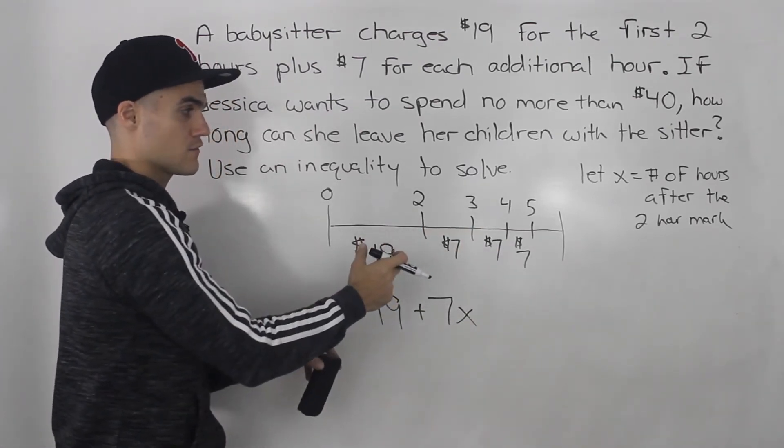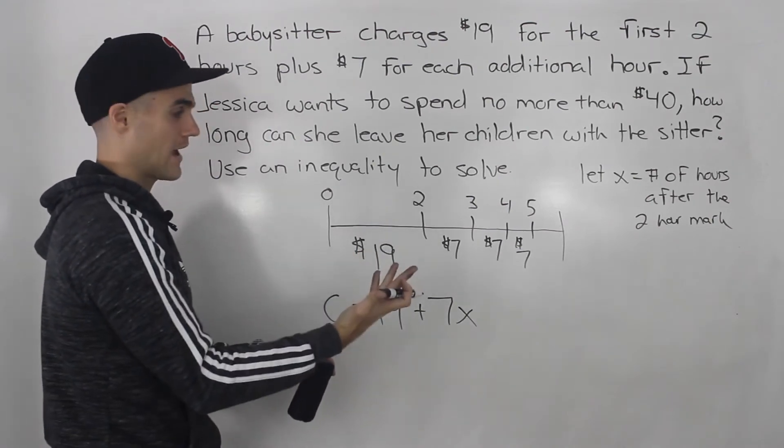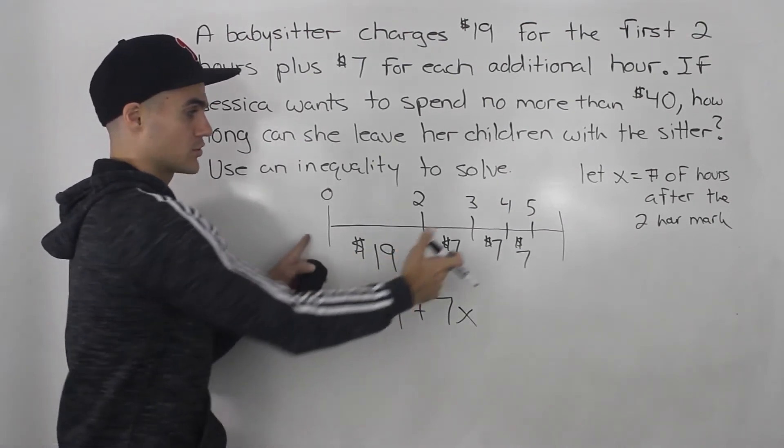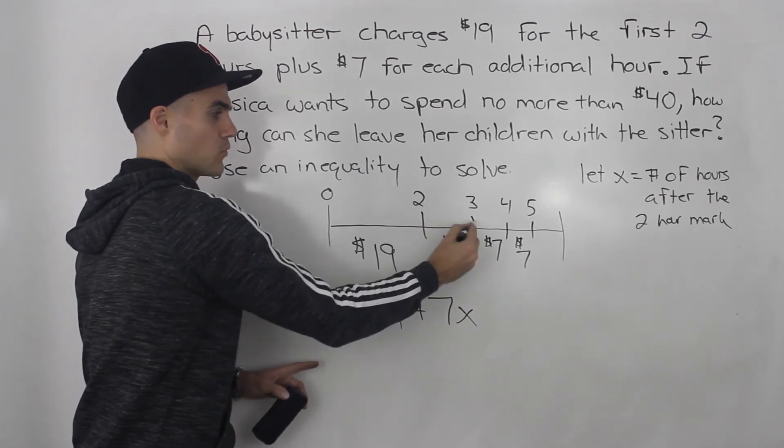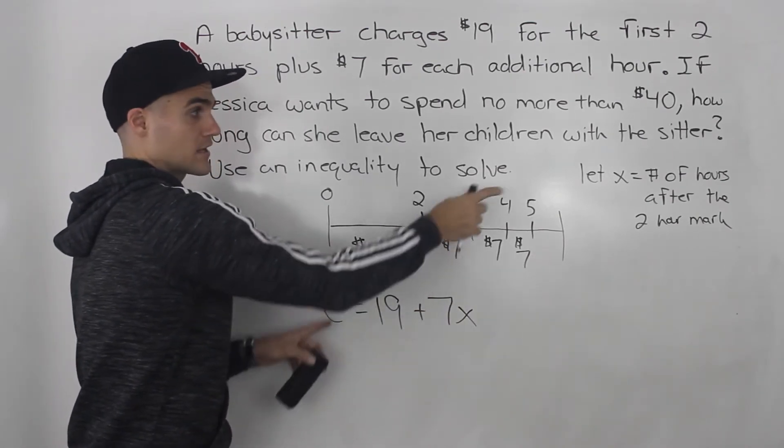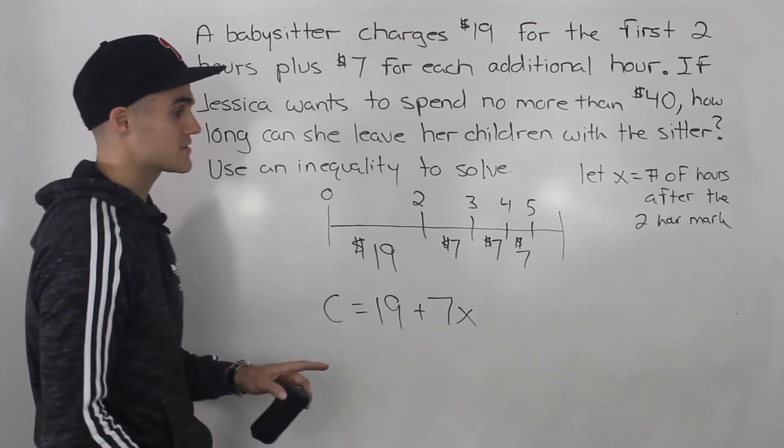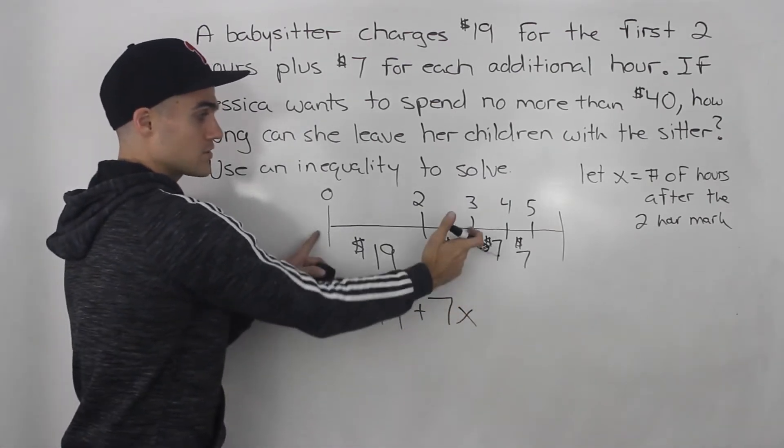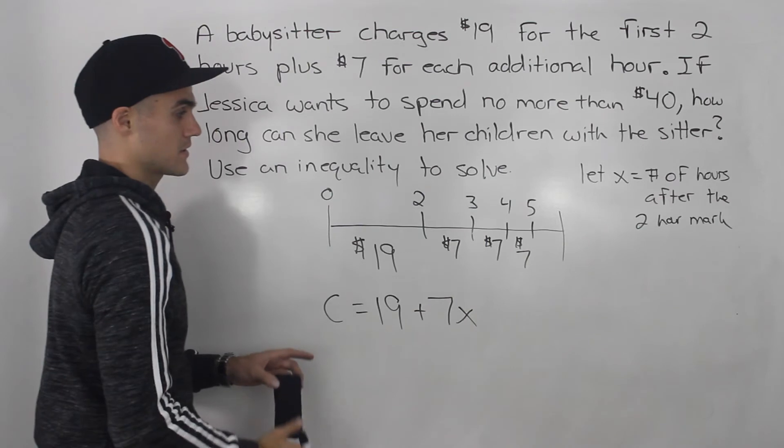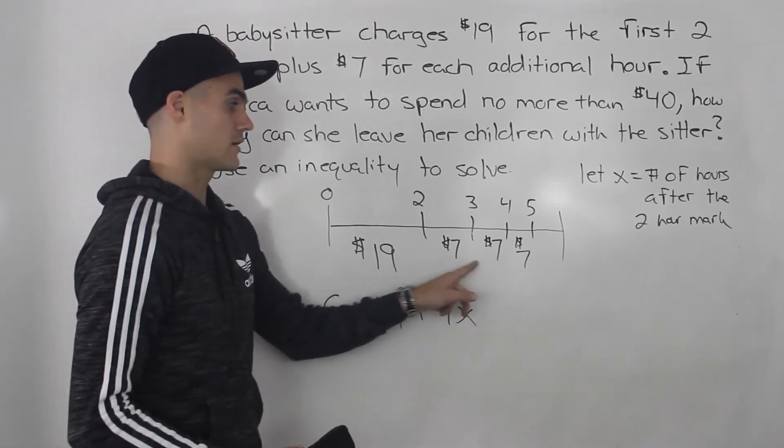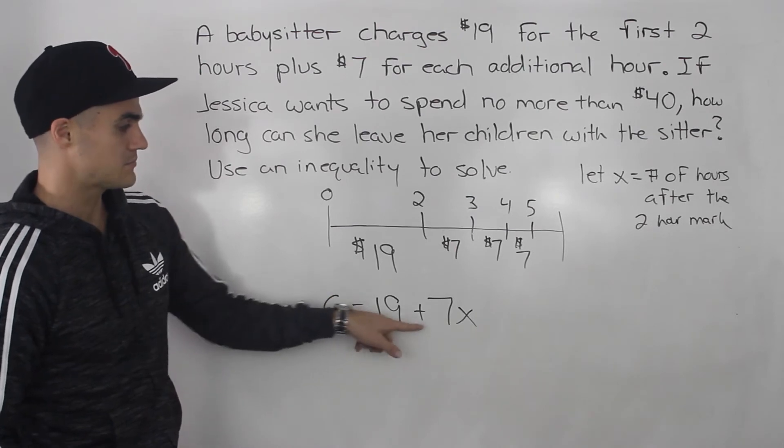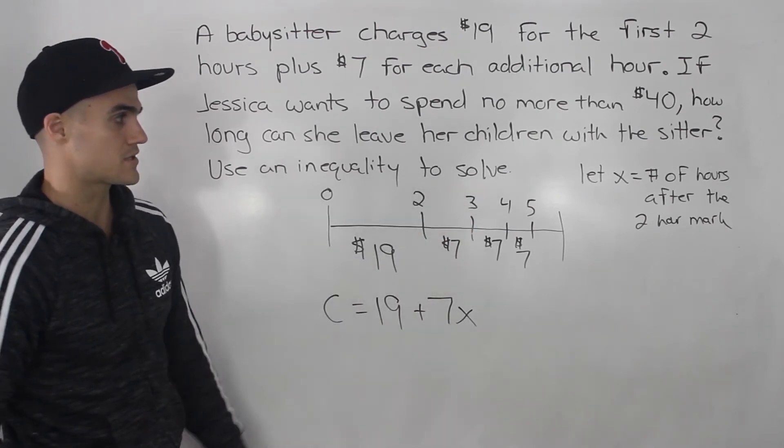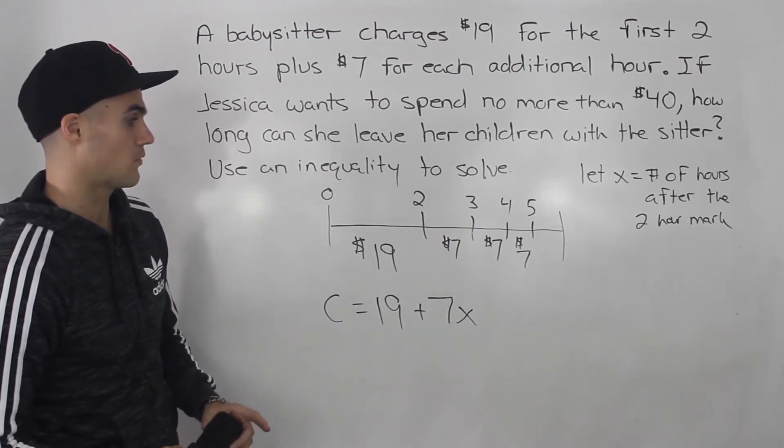So after the two hour mark, if you want an extra hour with the babysitter, which would bring your total up to three, we would plug in one for X because it would be one hour after the two hour mark. That's what we're letting X represent. X doesn't represent the total amount of hours, it would just be one hour after the two hour mark. So 19 plus 7X, where X represents the number of hours after the two hour mark.